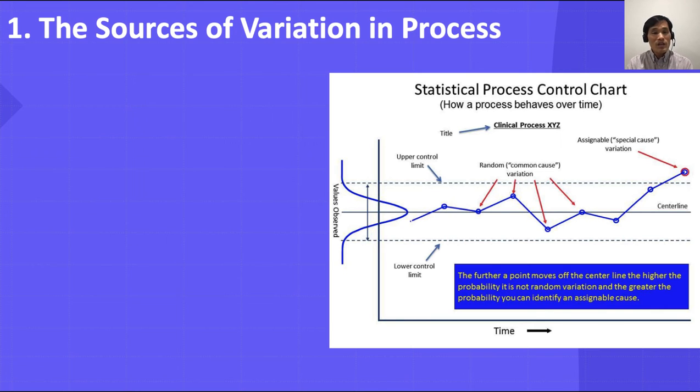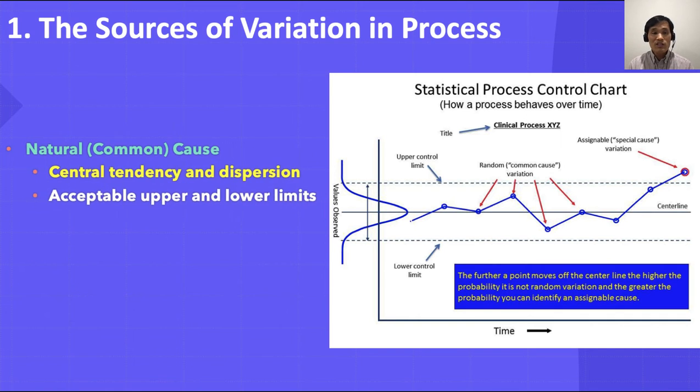First topic is the sources of variation in process. Statistical process control is a quality management tool to distinguish between natural variations and variations due to assignable causes. Variability always existed in process. Think of taking a course. Some students come early, some other students on time, and still other students come late. An instructor expects it to happen.